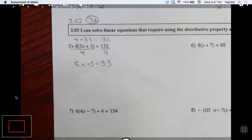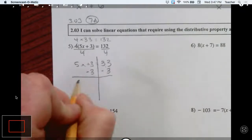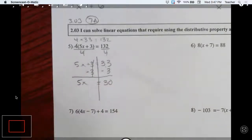And now we can just go ahead and solve this. We're going to subtract 3 from both sides. 5x equals 30. So what's x? It's 6.